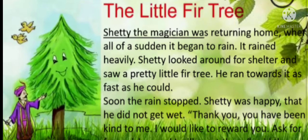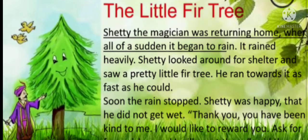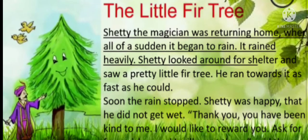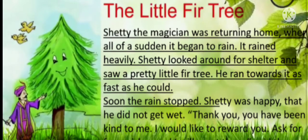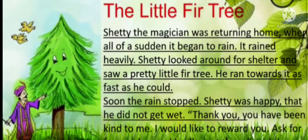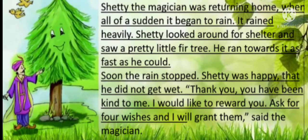Shetty the magician was returning home when all of a sudden it began to rain. It rained heavily. Shetty looked around for shelter and saw a pretty little fir tree. He ran towards it as fast as he could. Soon the rain stopped. Shetty was happy that he did not get wet. 'Thank you, you have been kind to me. I would like to reward you. Ask for four wishes and I will grant them,' said the magician.